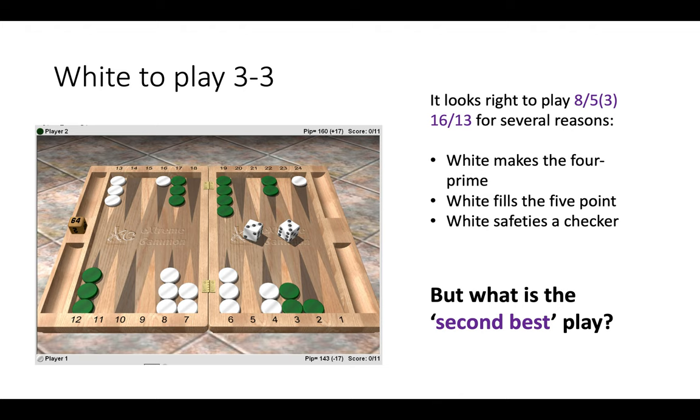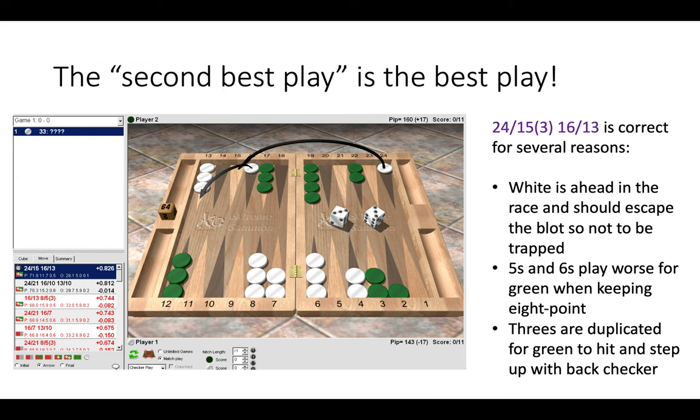But stop. What is your second best play? And the second best play of 24 to 15, 16 to 13, is actually the best play, again for several reasons. White is ahead in the race by 17 pips, so we need to get that blot moving so we're not trapped.